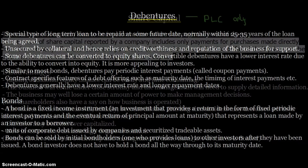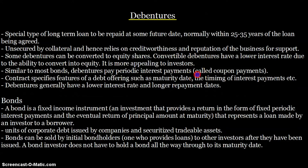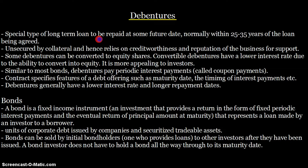Moving on to the next topic: debentures. Debentures are also long-term external sources of finance, and they are similar to bonds. A debenture is a special type of long-term loan to be repaid at some future date, normally within 25 to 35 years of the loan being agreed. As you can see, that is a very long-term loan, and furthermore it is unsecured by collateral.